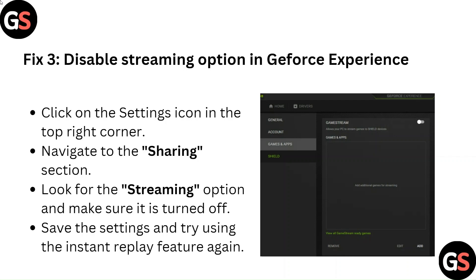Fix 3: Disable the Streaming Option in GeForce Experience. Click on the Settings icon in the top right corner and navigate to the Sharing section. Look for the Streaming option and make sure it is turned off. Save the settings and try using the Instant Replay feature again.